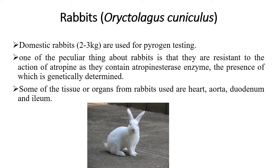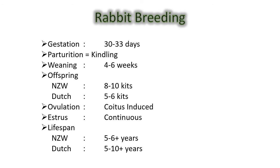Even if belladonna is consumed by the rabbit, it will not have an effect due to the presence of atropine esterase in the serum. Some of the tissues and organs from rabbits that are used in research include the heart, aorta, and uterus. The gestation period of rabbits is thirty to thirty-three days.